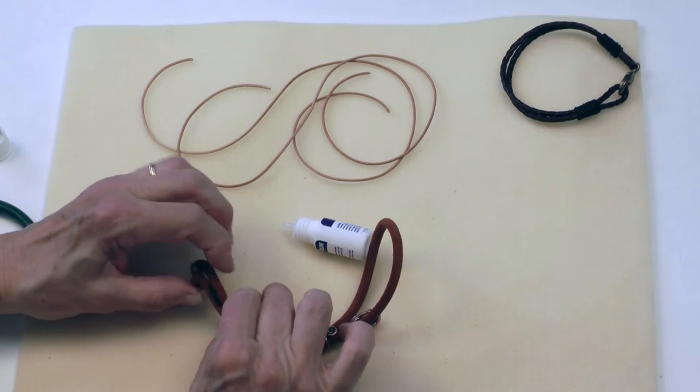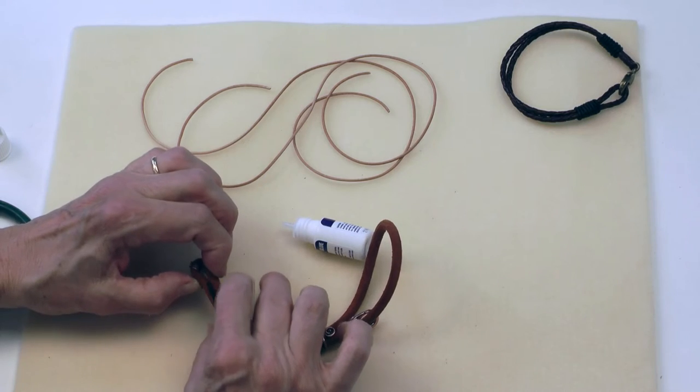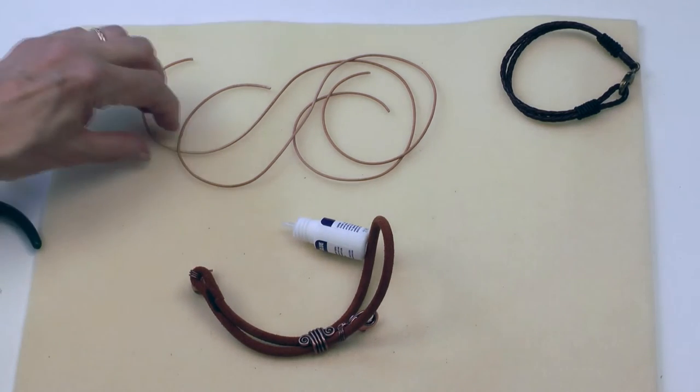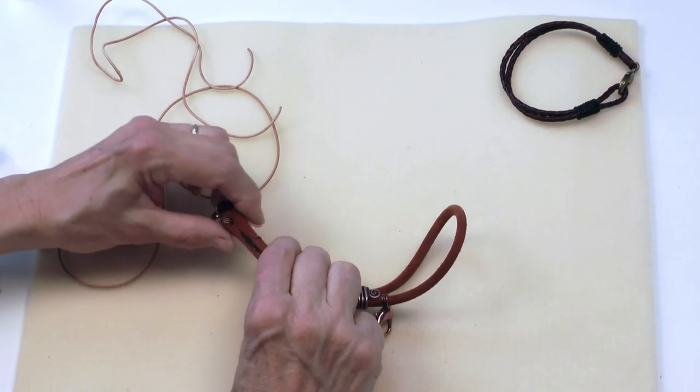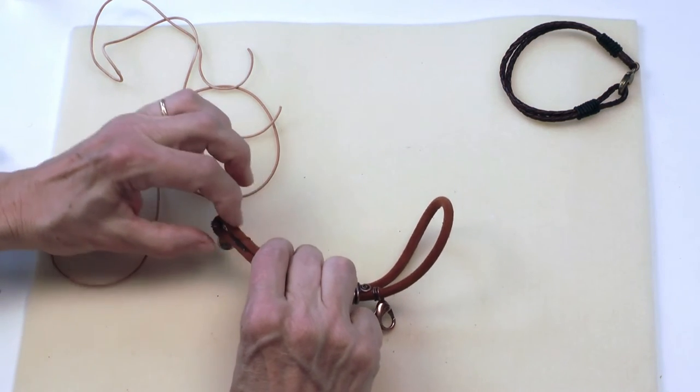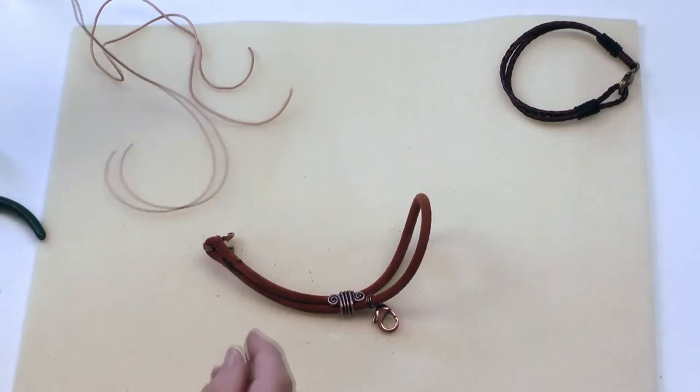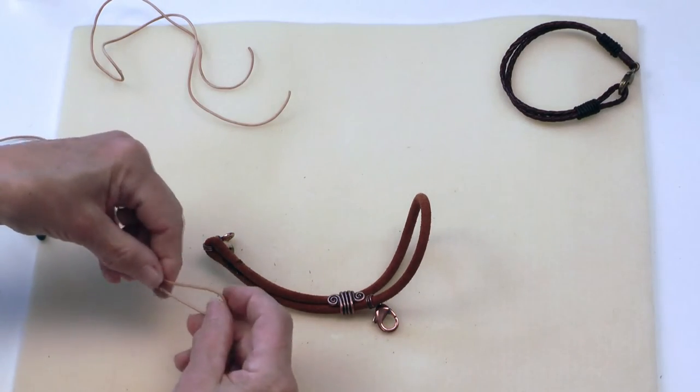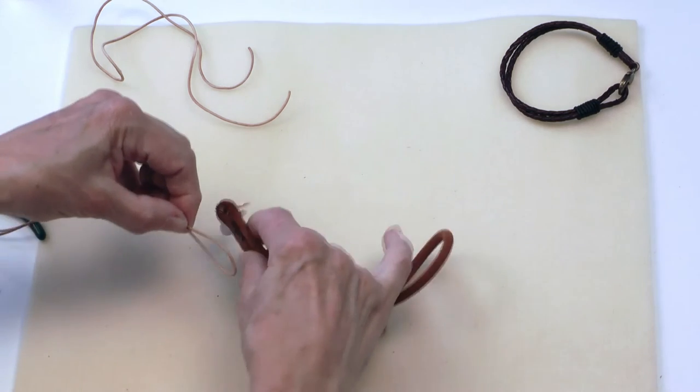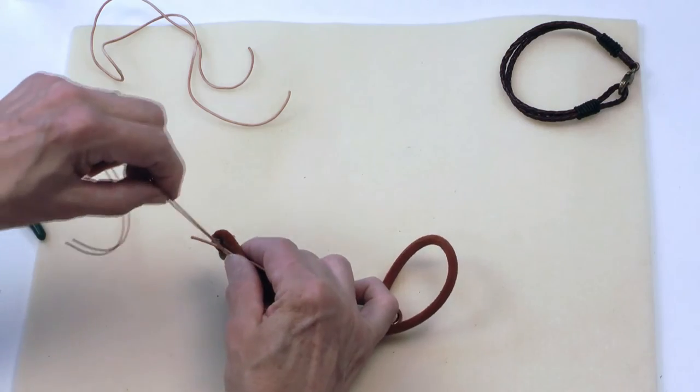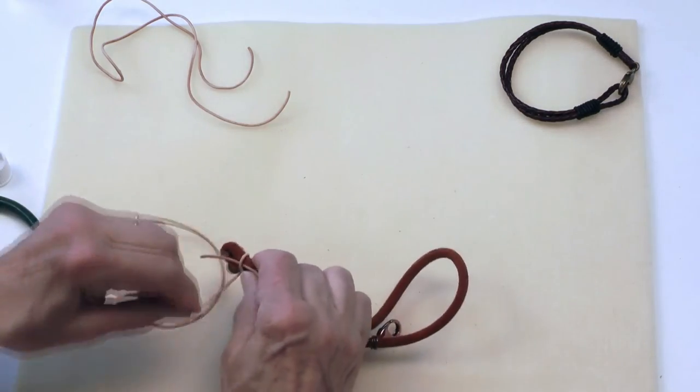I'm going to start by doing a coil knot around this area right here. My little pieces of leather are glued together here, so I'm going to start my coil knot. I'll take one of my pieces of leather, make a little loop at the top, lay it across the base, which in this case is this double loop, and I'm going to start wrapping.